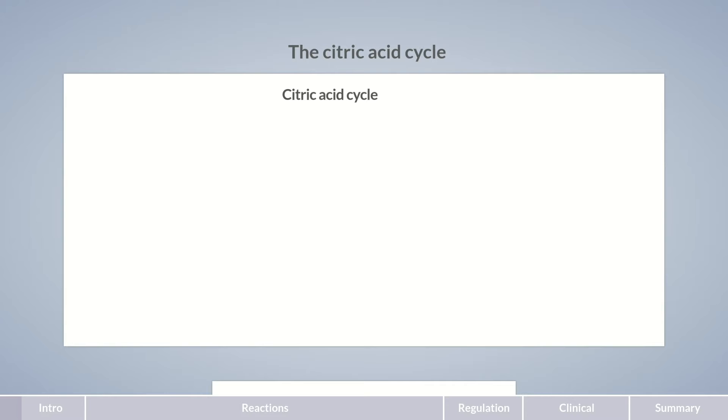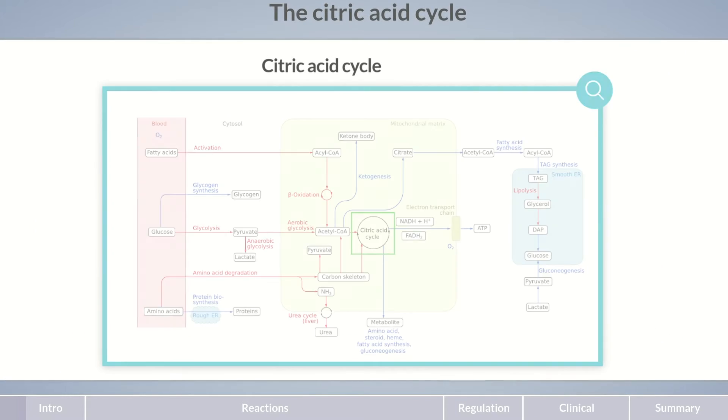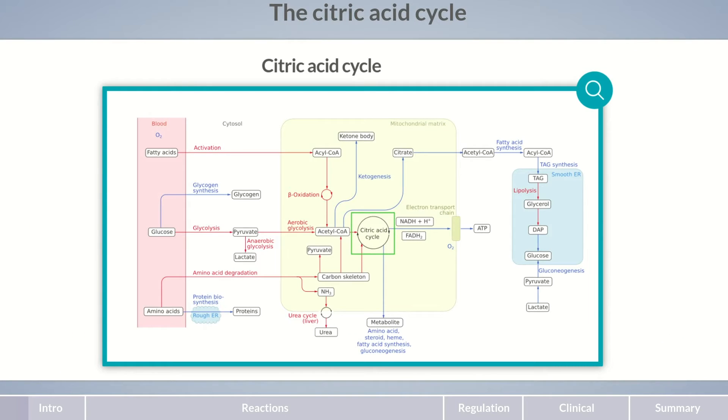The citric acid cycle is an essential metabolic pathway occurring in the mitochondrial matrix of aerobically active cells. Its intermediates serve as substrates for various anabolic processes in the cell.